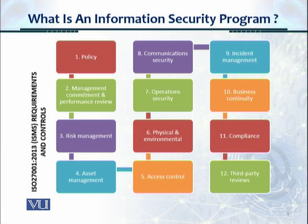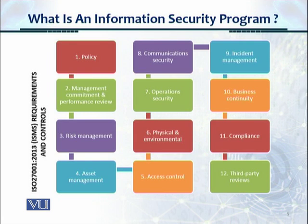The first component is policy — we set out what are the do's and don'ts and who should do what when. Management commitment and performance review needs to be conducted, with management reviewing whether the organization is achieving its information security objectives. Then we have a risk management program to assess risks, remediate and fix them, and implement risk treatment so that any aspect of the organization which needs to be secured has a risk treatment plan.